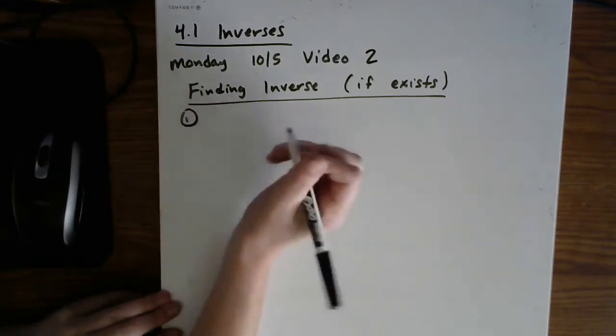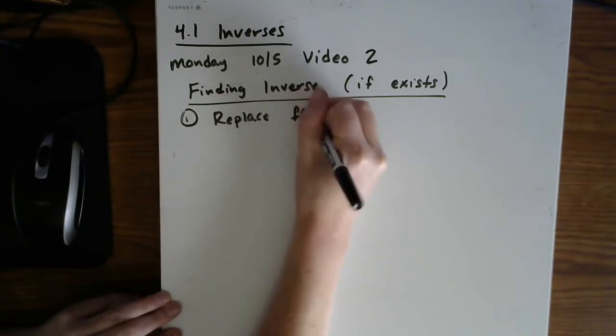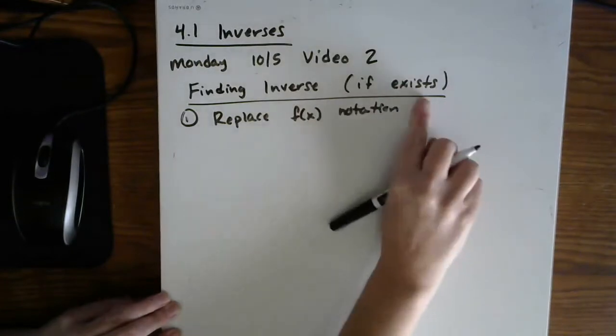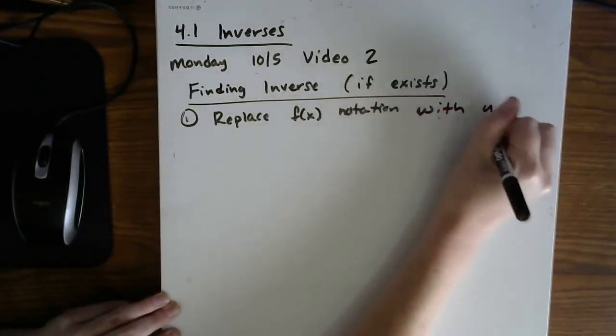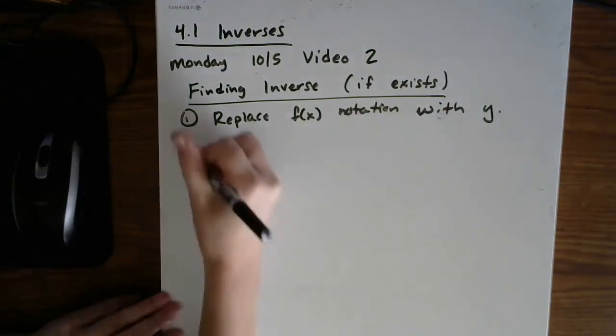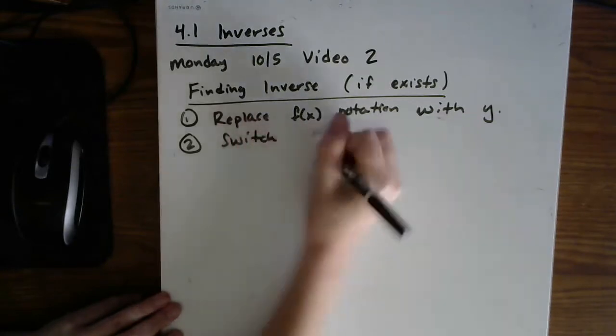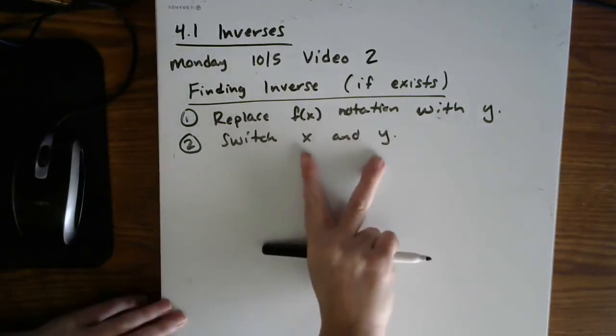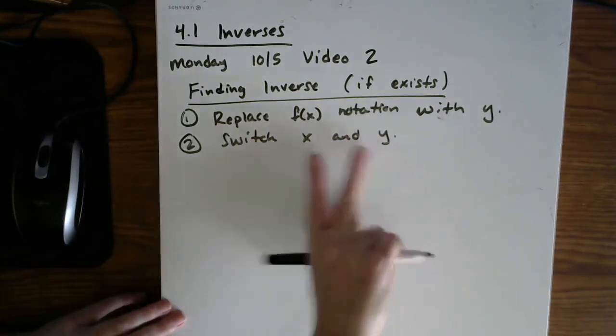So step one, let's replace the f of x notation with y. So go ahead and just do that replacement, then switch x and y. Now, think about why you're doing this. Remember, for inverses, domain and range switch places. So you need to physically switch those in the equation.